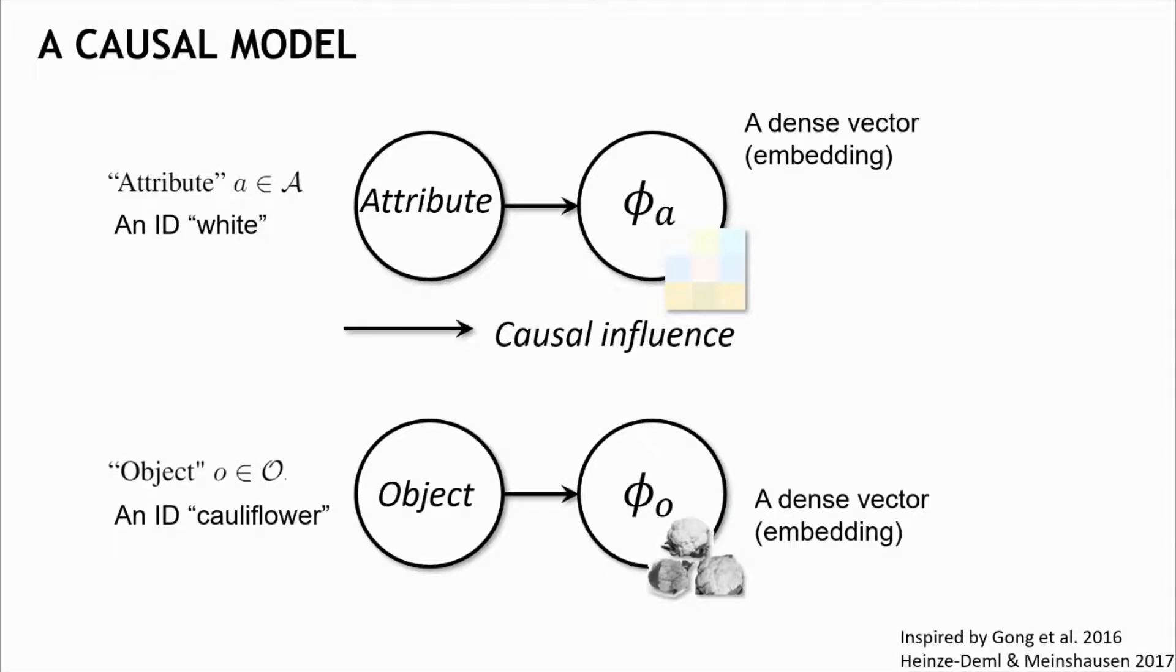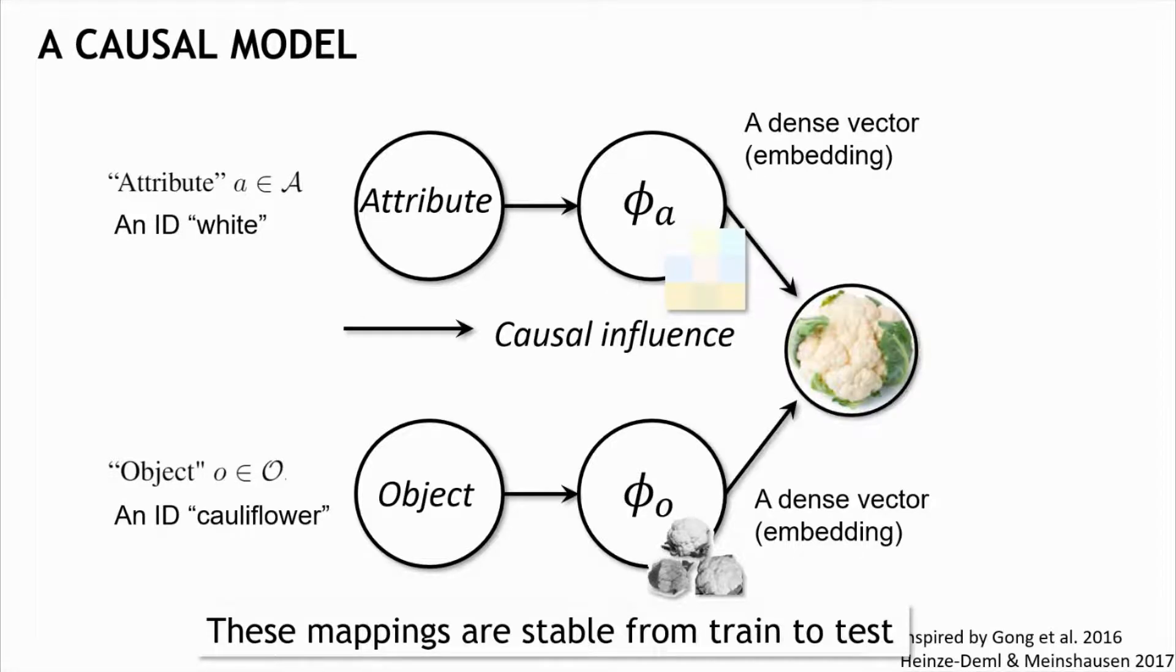The causal graph that generates images looks exactly like that. There is a variable for the attribute, which is just the identity of the attribute, a categorical variable, let's say white, which maps to some stable representation of how white looks like. Similarly, there is an object variable, let's say cauliflower, and it maps to some stable representation of how a cauliflower looks like. These mappings are stable from training to test time, and together, they jointly generate an image of a white cauliflower.